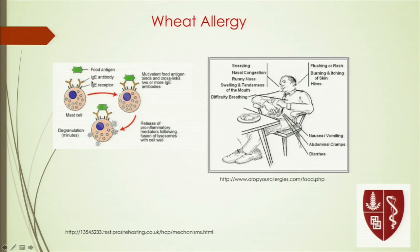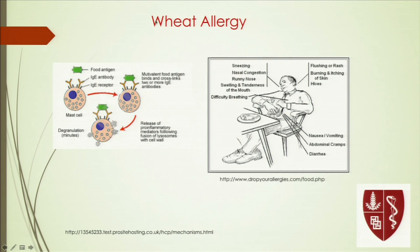Wheat allergy is uncommon. There is even something called exercise-induced wheat anaphylaxis, where consuming wheat and then exercising induces an allergic reaction. The mechanism is IgE receptors on mast cells and eosinophils — cells that are normally protective against parasites. When the allergen is recognized, these cells degranulate, releasing toxic granules, causing sneezing, nasal congestion, swelling of mucous membranes, difficulty breathing, and in extreme cases, life-threatening anaphylaxis.